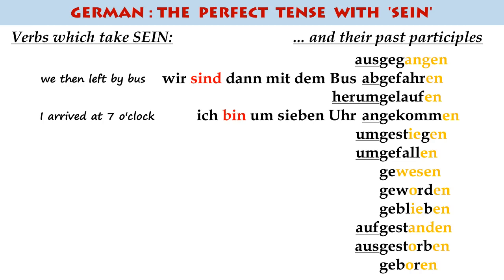And umsteigen — here's another one, meaning 'to change trains'. For example, 'We changed trains in Stuttgart': Wir sind in Stuttgart umgestiegen. Did you notice it's wir sind, not wir haben?